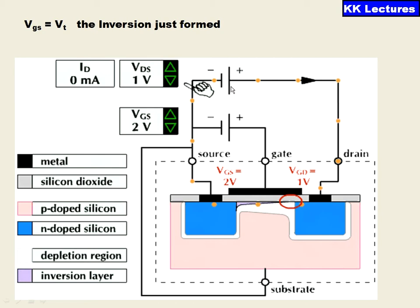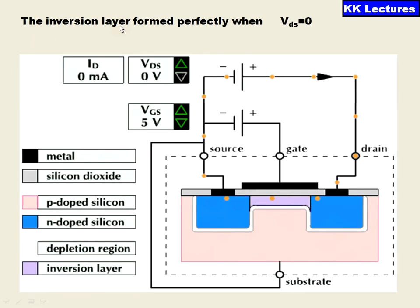Moreover, as my VDS value is one volt, that is making a reverse bias at this junction and the depletion width is increasing. The inversion layer forms perfectly when VDS value is zero - when the VGS value is high and VDS is zero, then the channel is formed perfectly and there is a bridge between source and drain for the movement of electrons.